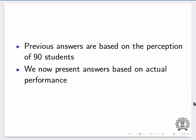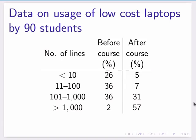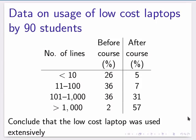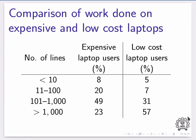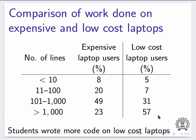The previous answers are based on the perception of 90 students. We now present answers based on actual performance. Looking at data on usage, only 2% of them wrote 1000 lines or more before the course. This number increased to 57% after receiving our laptop — we conclude that the low-cost laptop was used extensively. Comparing work done by users of expensive and low-cost laptops, only 23% of expensive laptop users wrote more than 1000 lines, whereas the corresponding number for low-cost laptops is 57%. Students wrote more code on low-cost laptops.